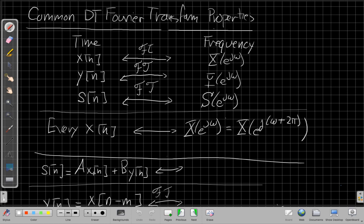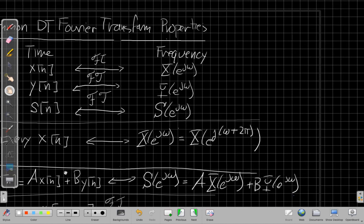If I take two discrete time signals and scale them and add them, the Fourier transform is linear. So the Fourier transform has the same scaling and adding. I have additivity and I have scaling. So S of e to the j omega will be the same constant A times X of e to the j omega and the same constant B times Y of e to the j omega. This is what we call the linearity property.